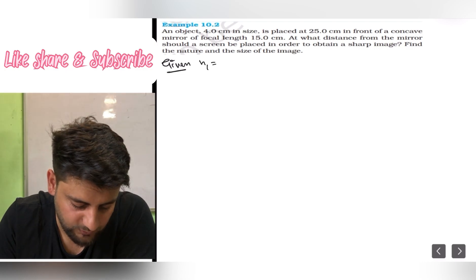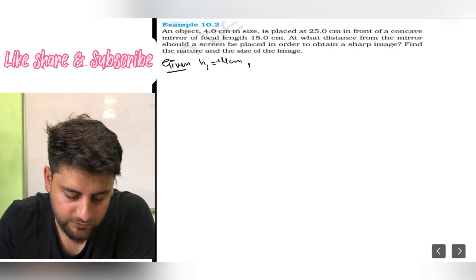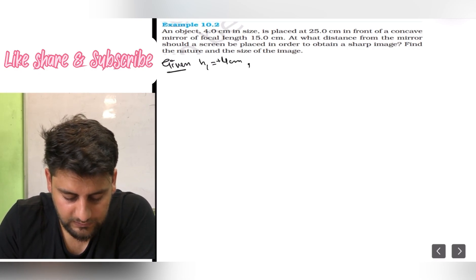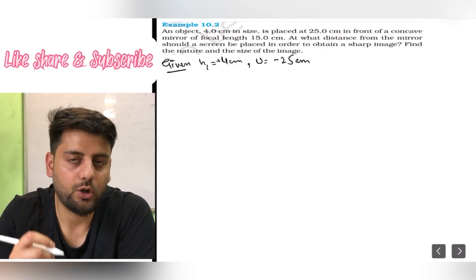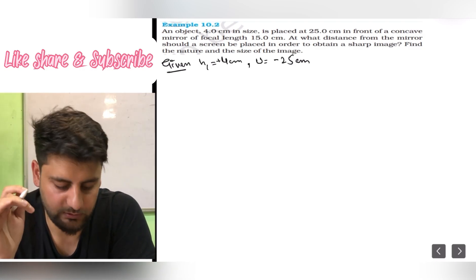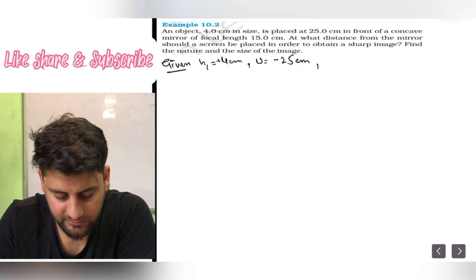Given is what? An object of 4 centimeter in size, that means h1 is 4 centimeter plus. At a distance of 25 centimeter in front of a concave mirror. It's a concave mirror. Keep in mind. How much is the object distance? 25 centimeters, always negative. Object distance is always negative whether concave mirror or convex mirror.